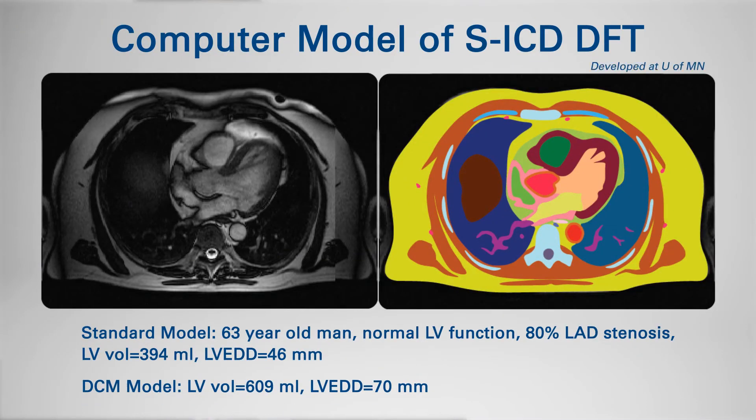This computer model examines defibrillation efficacy and threshold for the subcutaneous ICD with various assumptions: the coil is in the anterior chest, typically left parasternal, and the can is in the typical lateral or posterior position, with those structures being moved around. The model looks at impedances of the intervening tissues and what current will be created. The key factor is what the electrical field does through the human body, which is highly dependent on electrode positions and intervening tissue impedances. Current moves easily through low-impedance tissue and with difficulty through high-impedance tissue.